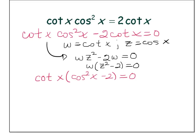Whenever I have two factors multiplied together and their product is zero, the zero product property tells me that either one or both of those factors were zero. Since we don't know which one, we set them both equal to zero. So I have cotangent x equals zero, or cosine squared x minus two equals zero.